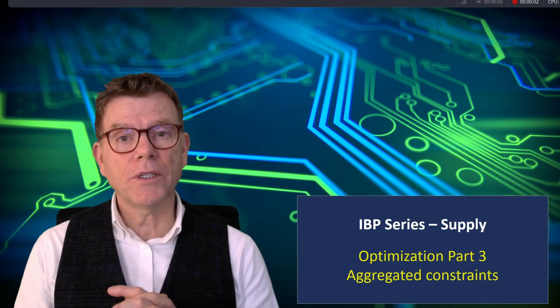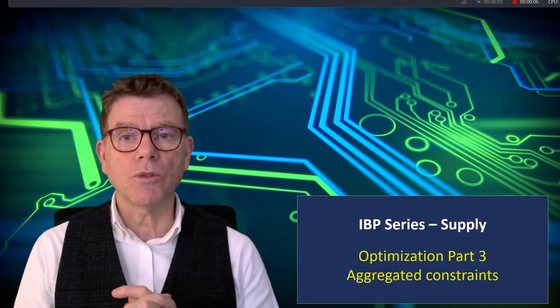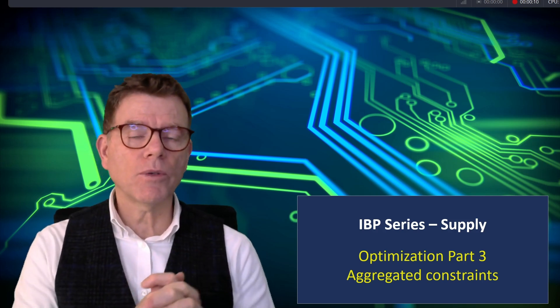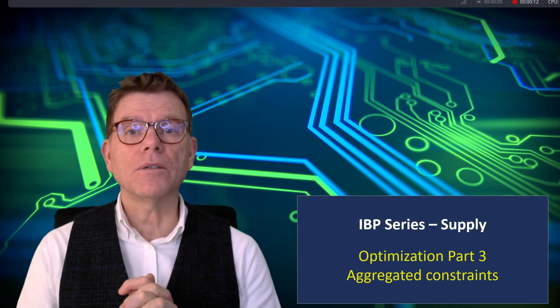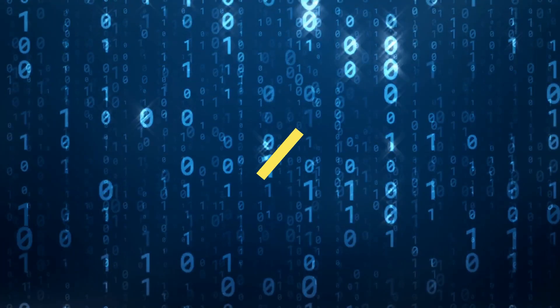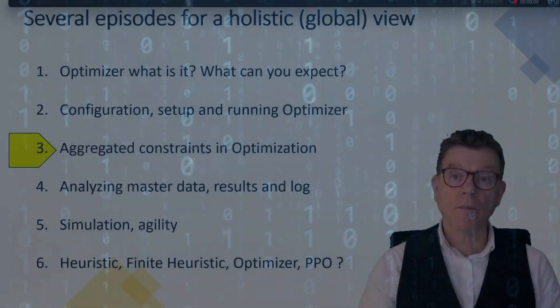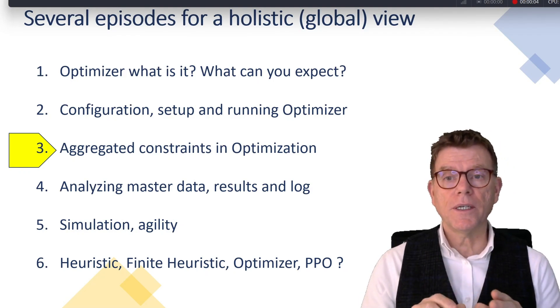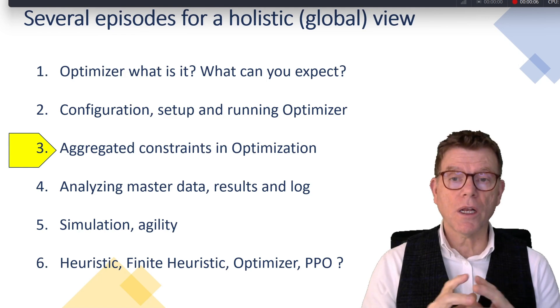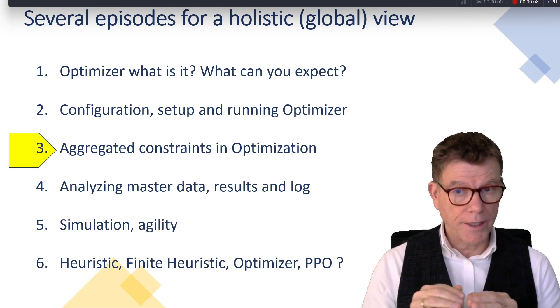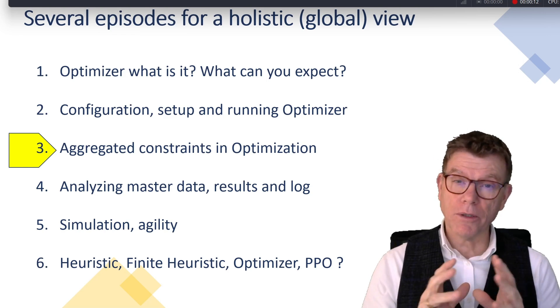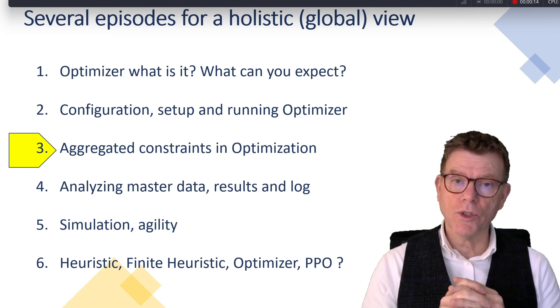Hello and welcome to the IBP series powered by Camelot. Today, part 3 of the optimization — which was not mentioned in the original agenda — let's discuss aggregated constraints in the optimizer. Just as a reminder, what we've seen so far was the optimizer concept, then last episode the configuration, and now we will be focused on aggregated constraints in the optimization, a particular capability in IBP which is very interesting.